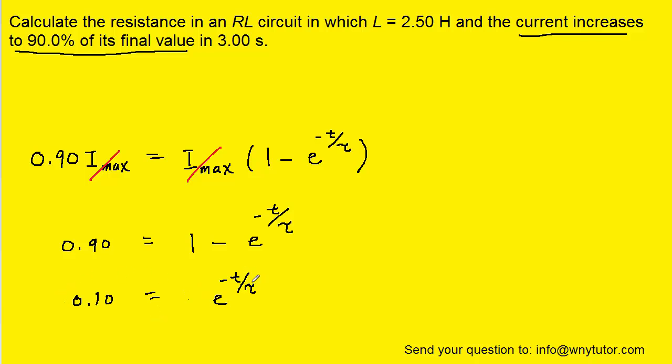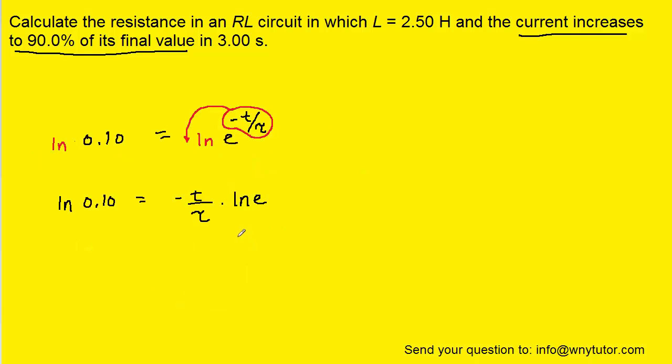Since tau is trapped, so to speak, in the exponent, we need to take the natural log of both sides of the equation. And through the properties of natural logs, we know that this exponent can be shifted to the front of the ln of E. Now, the natural log of E is just equal to 1, so we can cancel that term.